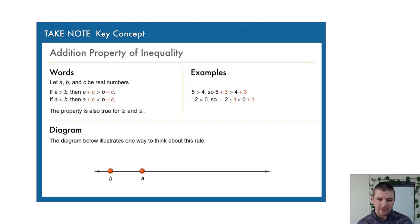If a is greater than b, then a + c is greater than b + c. If a is less than b, then a + c will also be less than b + c. And this is also true for greater than or equal to, as well as less than or equal to.